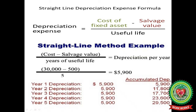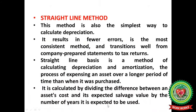$5,900 keeps on accumulating year after year. At the end, in the fifth year when the asset is not in a proper condition to be used further, the total depreciation charged is about $29,500. Your original cost was $30,000, and with accumulated depreciation of $29,500 you are still experiencing a loss on the asset.